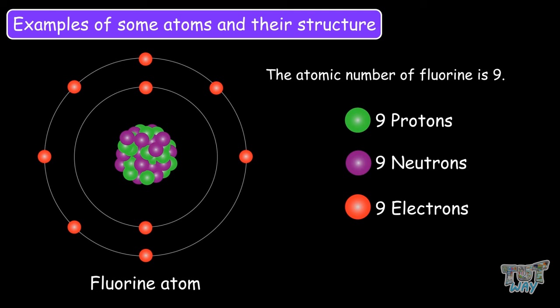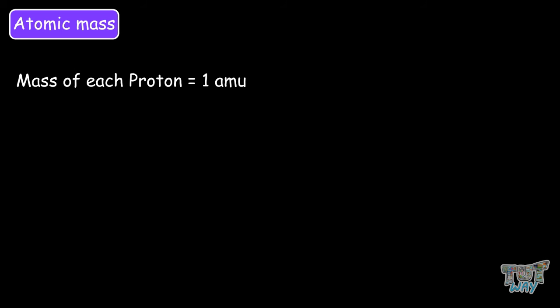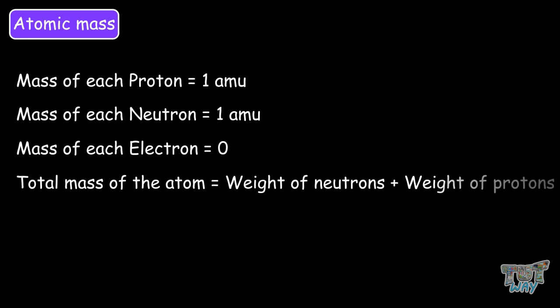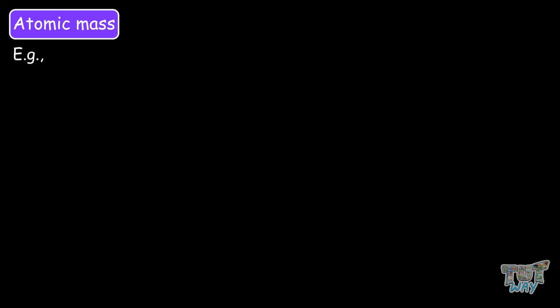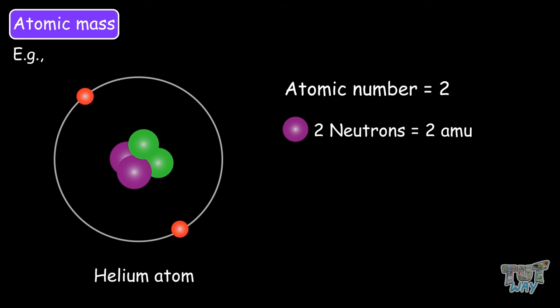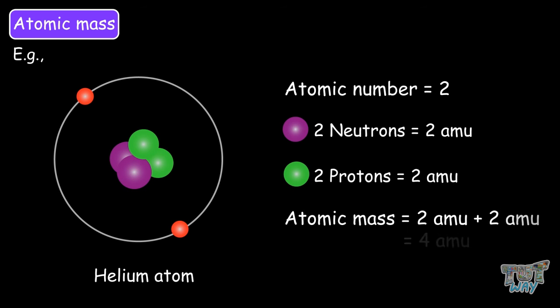Now let's learn what atomic mass is. The mass of each proton is 1 amu and the mass of each neutron is also 1 amu, and electrons have negligible mass. So the total mass of the atom is the weight of the neutrons and protons. For example, in the case of helium, the atomic number is 2, which means it has 2 neutrons and 2 protons, so the atomic mass is 4 amu.